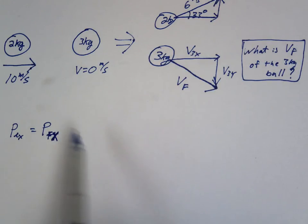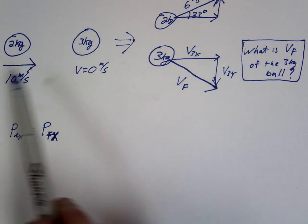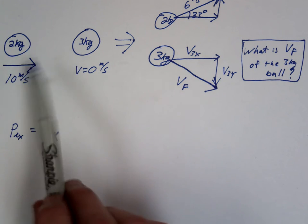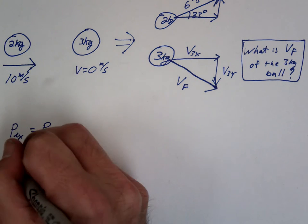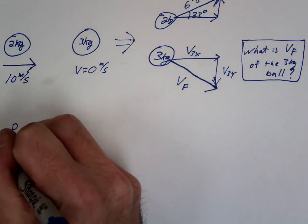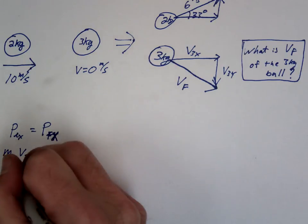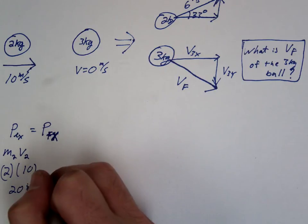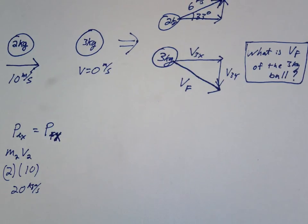We're going to do p-initial equals p-final in the x and y directions. Let's do the x-direction first. Which of these 2 balls has an x-momentum? Only the 2. The 3 is not even moving, so it doesn't even have a momentum. So we just take the mass of the 2 times the velocity of the 2. That's the initial — 2 times 10, which is 20. So the starting horizontal momentum is going to be 20.